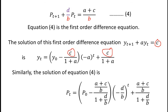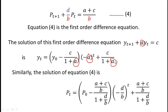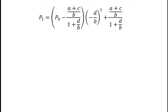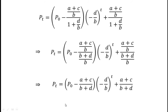In equation 4, instead of c we have (a+c)/b, and instead of a we have d/b. That is why the solution of equation 4 is: pt equals (p₀ minus (a+c)/b / (1 + d/b))·(−d/b)^t plus (a+c)/b / (1 + d/b). After simplification, we get: pt equals (p₀ minus (a+c)/(b+d))·(−d/b)^t plus (a+c)/(b+d). This is equation number 5.